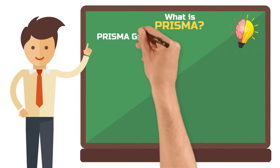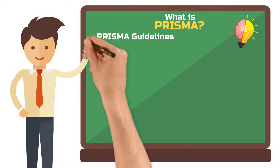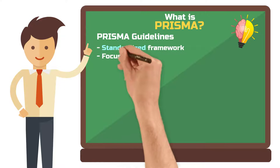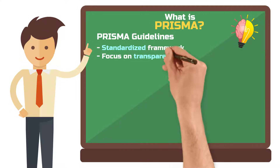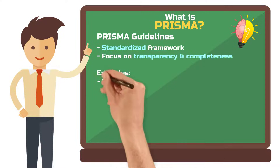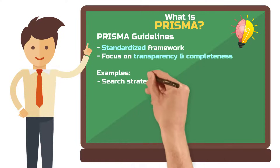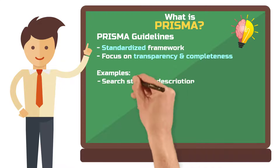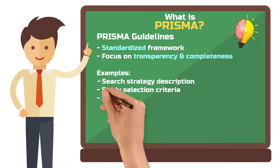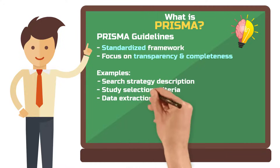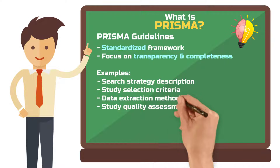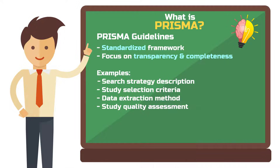The PRISMA guidelines offer a standardized framework that ensures all important aspects of a systematic review are reported transparently and completely. This includes describing the search strategy, the criteria for selecting studies, the method for data extraction, and the assessment of study quality.